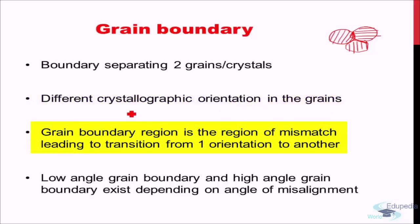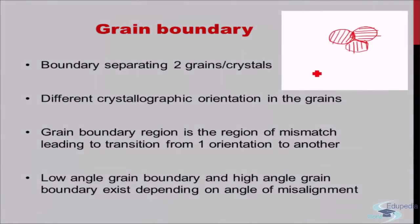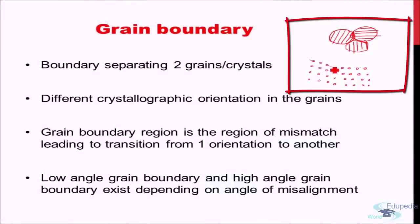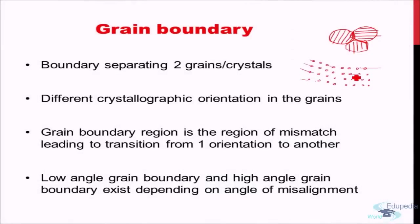The grain boundary region is a region of mismatch leading to transition from one orientation to a different orientation. In atomic terms, one grain may have atoms perfectly arranged in one fashion, while the adjoining grain has atoms arranged differently. At the boundary, atoms are not exactly located where they should be from either grain's perspective — there is an internal region where atoms are randomly placed and not perfectly aligned.